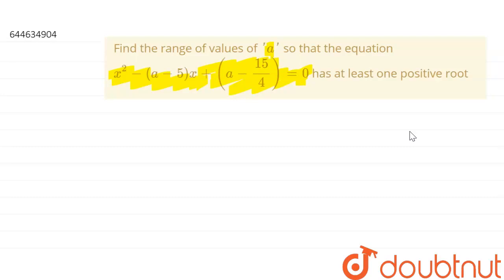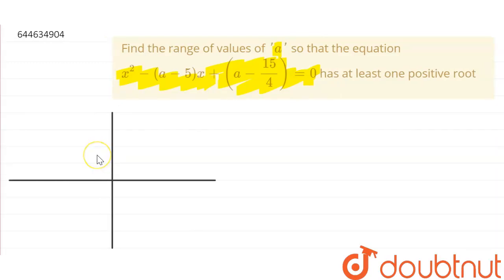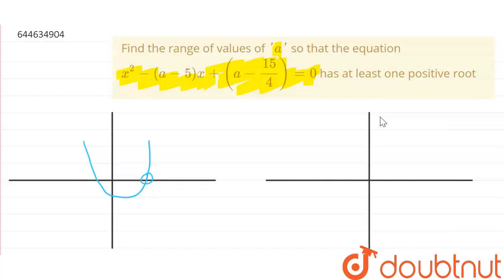For having at least one positive root, there are two possibilities. The first possibility is that the graph has one positive root, and the second possibility is that we have both roots positive. The graph for two positive roots will look like this.